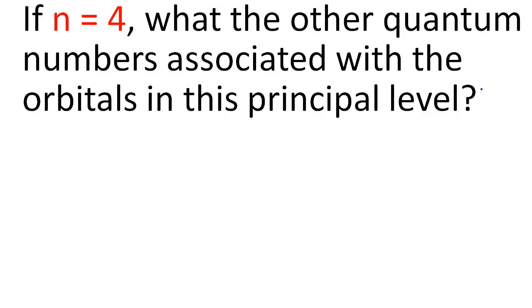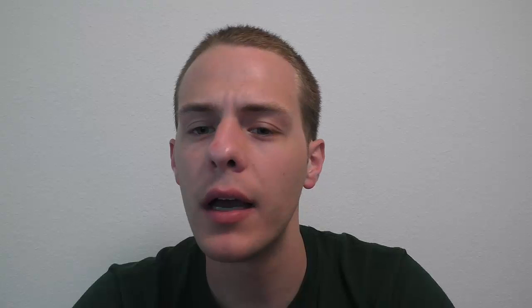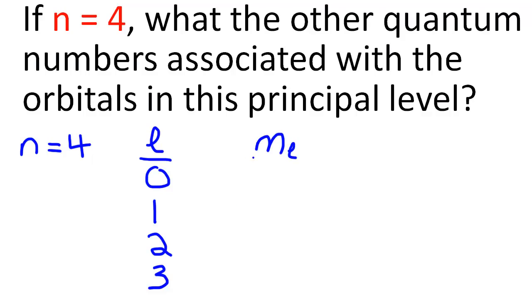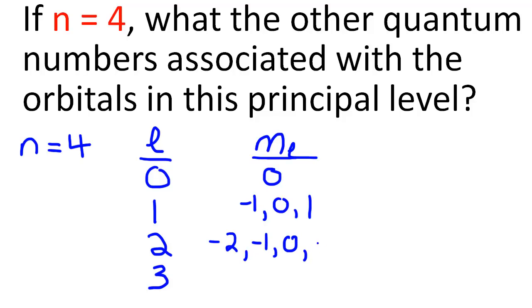Now we can solve a commonly encountered problem: if n = 4, what are the other quantum numbers associated with the orbitals in this principal level? If n = 4, the possible values of l are 0, 1, 2, and 3. Where l = 0, m sub l can only be 0. Where l = 1, m sub l can be −1, 0, and 1. Where l = 2, m sub l can be −2, −1, 0, 1, and 2. Where l = 3, m sub l can be −3, −2, −1, 0, 1, 2, and 3.